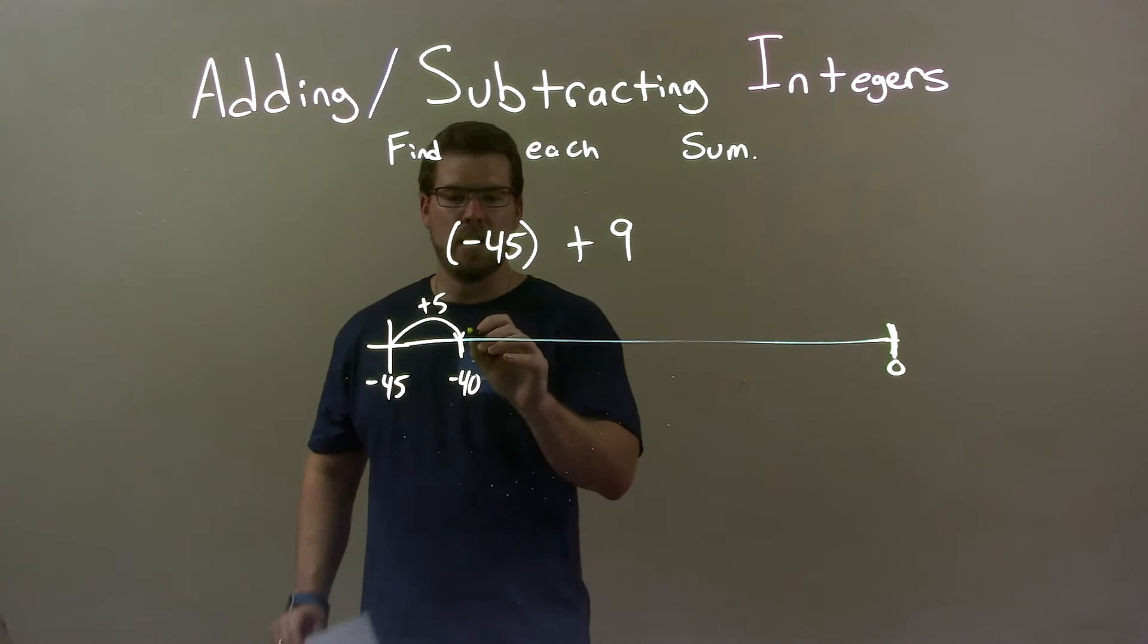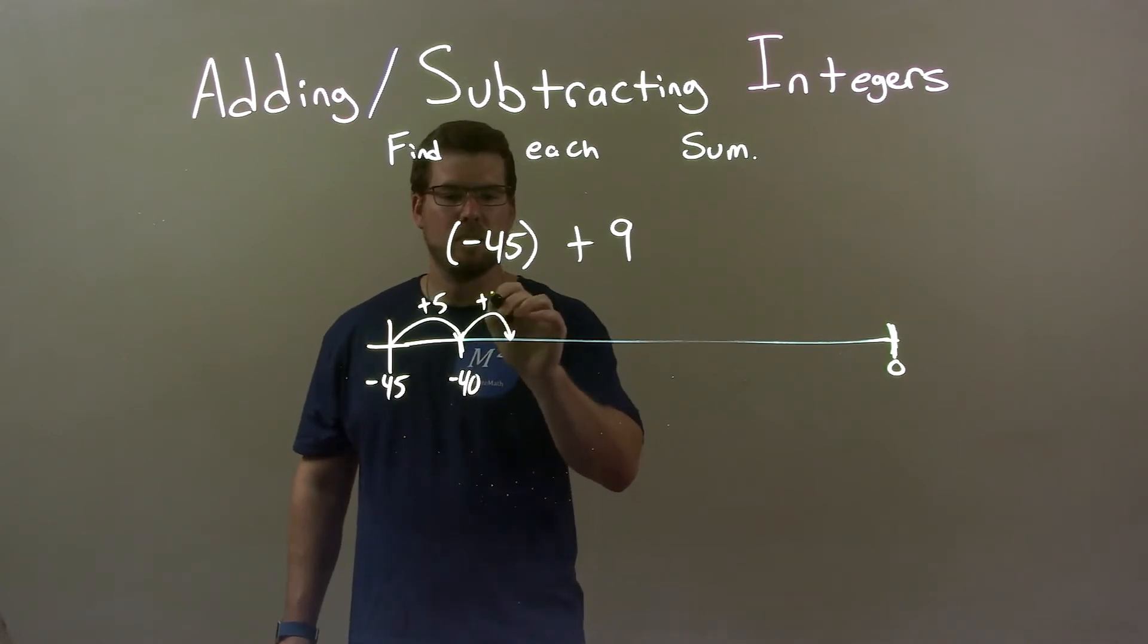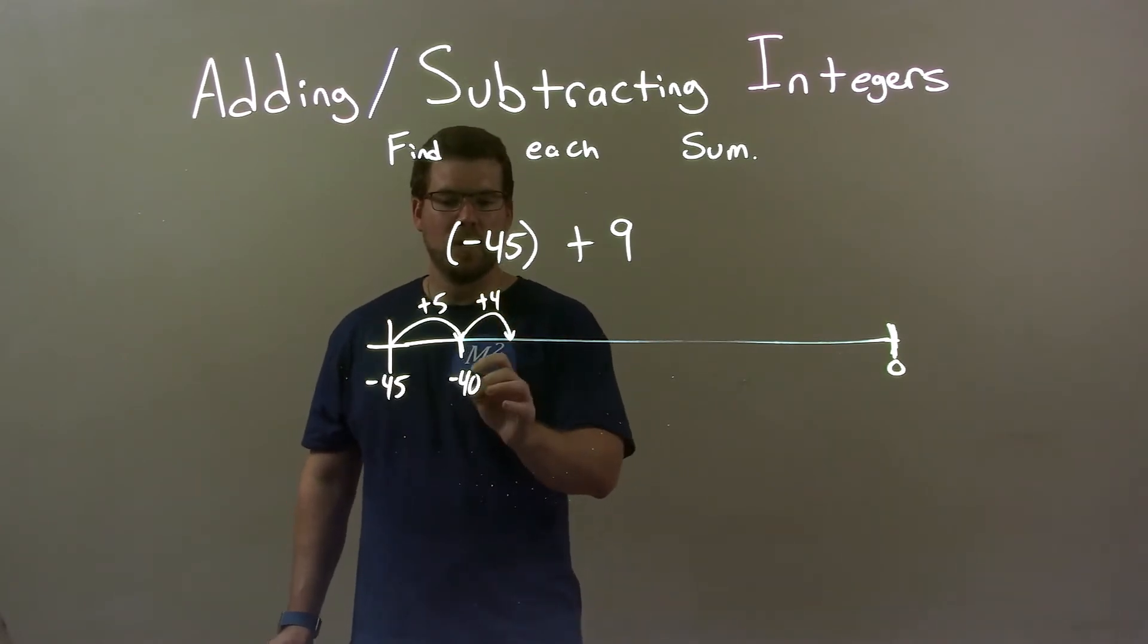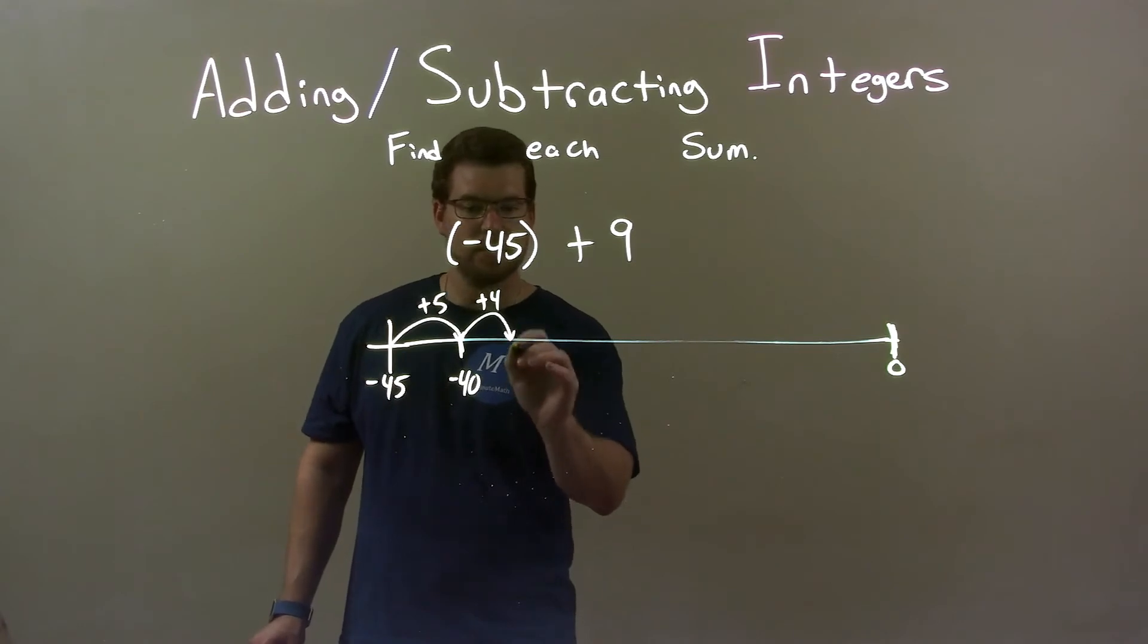But I still have 4 more units to get to 9. So I add a plus 4 here, plus 4. So negative 40 plus 4 to the positive direction is a negative 36.